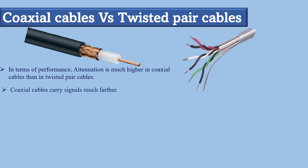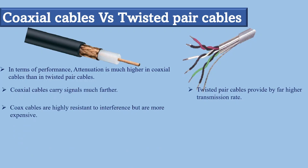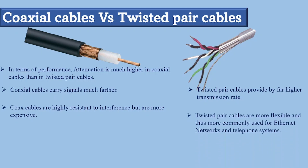Coax cables carry signals much further, and twisted pair cables provide by far higher transmission rates. For example, Cat 6a or Cat 7 can transmit up to 10 gigabits per second, and the newest version Cat 8 carries even more, up to 40 gigabits per second. Coax cables are highly resistant to interference but are more expensive, whereas twisted pair cables are more flexible and thus more commonly used for ethernet networks and telephone systems.